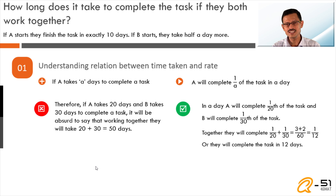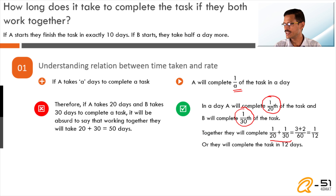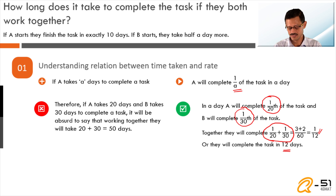The correct way to frame such equations: A completes the task in 20 days, so A completes 1/20 of the task per day. B completes the task in 30 days, so B completes 1/30 per day. Together, in a day they complete 1/20 + 1/30 = 1/12 of the task, meaning they complete the entire task in 12 days. So whenever A takes 40 days, your first step is to write that A completes 1/40 of the task per day.